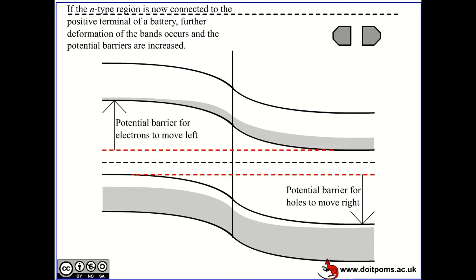The barrier prevents more electrons from moving to the P-side because they would need more energy to overcome it. For holes, energy levels go the other way, increasing downwards on the band diagram, so holes also need more energy to overcome the potential barrier. You end up with a depletion region in the center with no free charges. In equilibrium, the Fermi level — which this animation calls the chemical potential — flattens out and is the same across both the P-type and N-type sides.